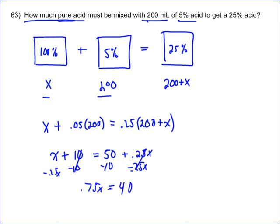So you get 0.75x equals 40. So you divide both sides by 0.75. And so now all you have to do is determine what is 40 divided by 0.75, and that's going to equal 160 over 3, or maybe what you have on your calculator, which would be 53.3 repeating milliliters.